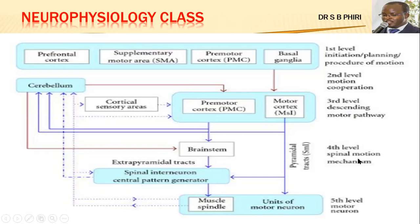From the third level of motor pathways, we have the fourth level, which is involved in spinal motion mechanisms. At the level of the spinal cord there are regulatory centers also involved in reflexes. The higher centers in the brain stem contain nuclei that regulate the lower centers, which are at the level of the spinal cord. The fourth level involves spinal motion mechanisms that regulate the actual motor neurons innervating the skeletal muscles and glandular cells.